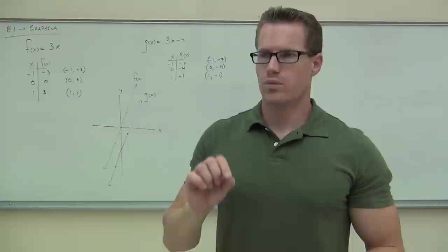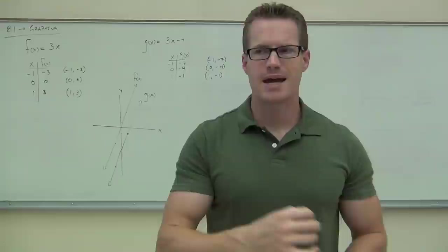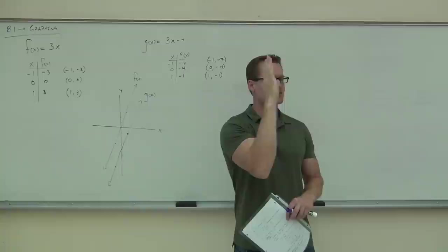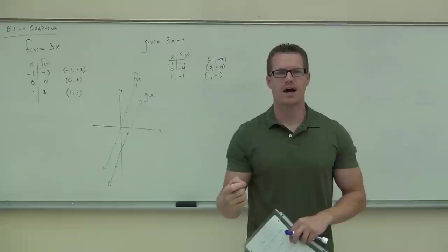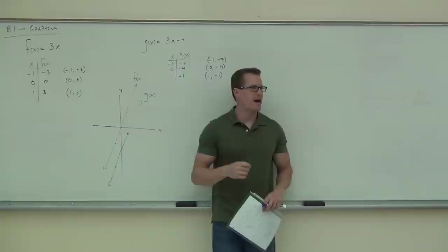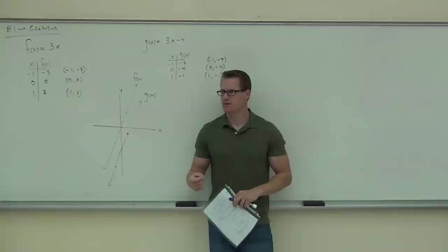I want you to notice two things. First: do you see where these graphs cross the y-axis? Where does f of x cross the y-axis? It's right here at zero. How about g of x? Where does that cross the y-axis? Maybe negative four. Now I want you to look back at the functions — the equations. Do you see a coincidence here? What's similar between these two graphs? The 3x. Notice how we have a 3x here and a 3x here. Then we have — what's over here? Zero over here, and we have a minus four over here.